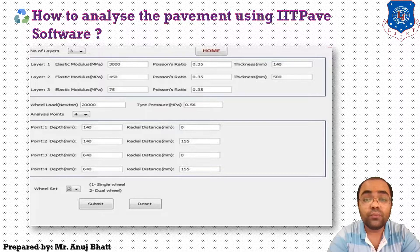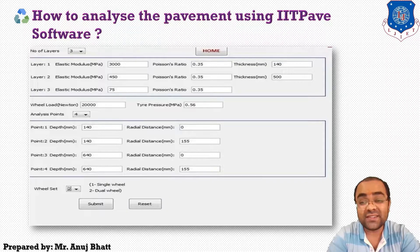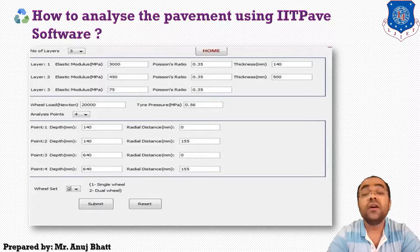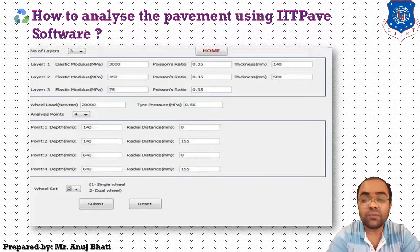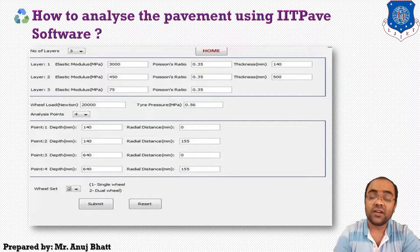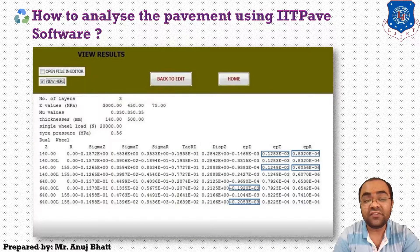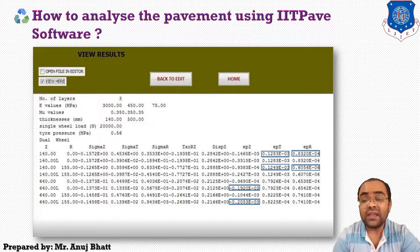The next check is: if the computed strains are less than the permissible strain, the design is acceptable. If not, run the program with a new thickness combination until permissible strain values are achieved. Here in the figure you can see the final outputs.